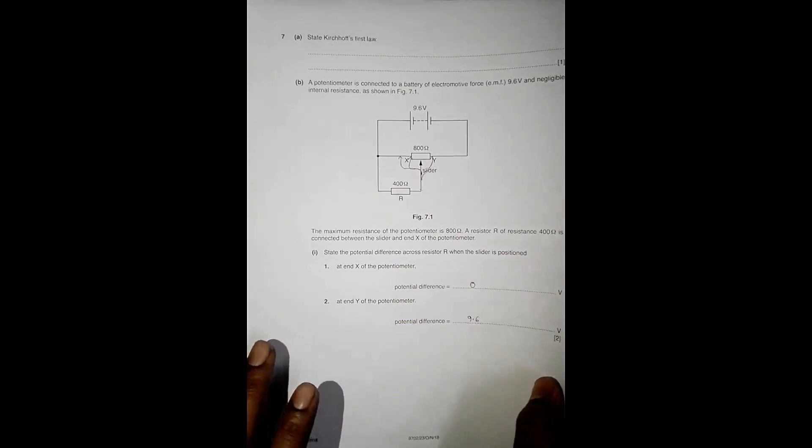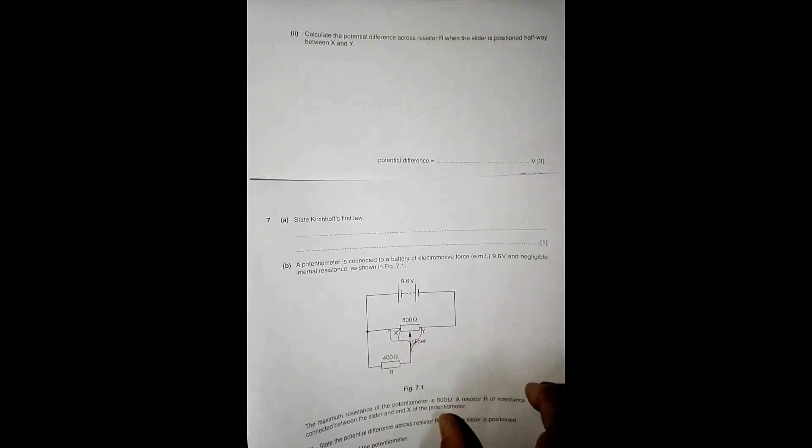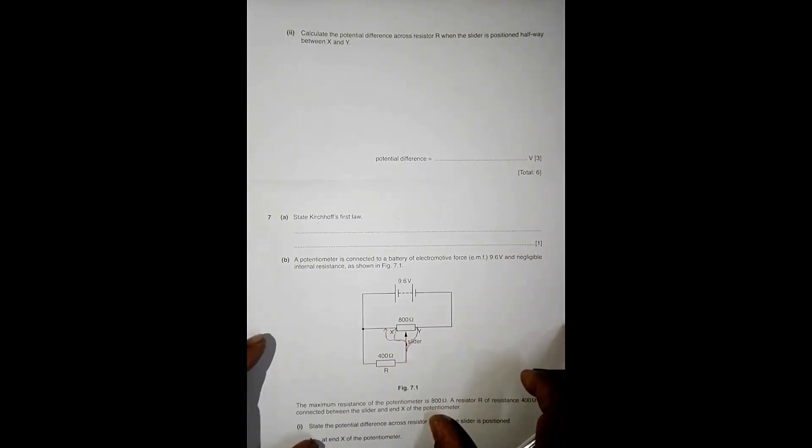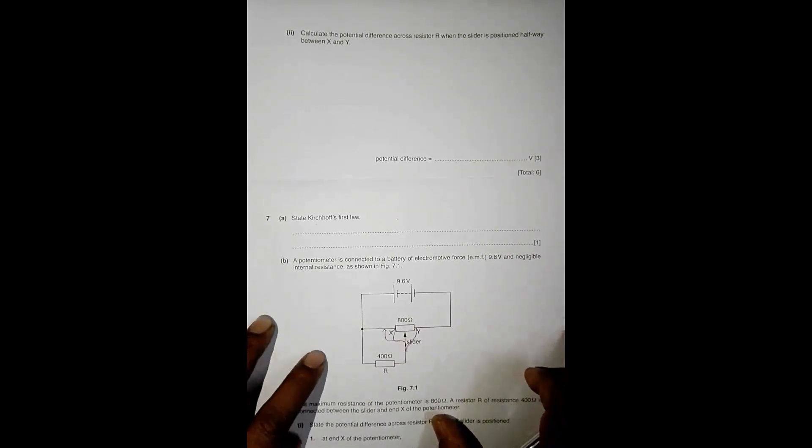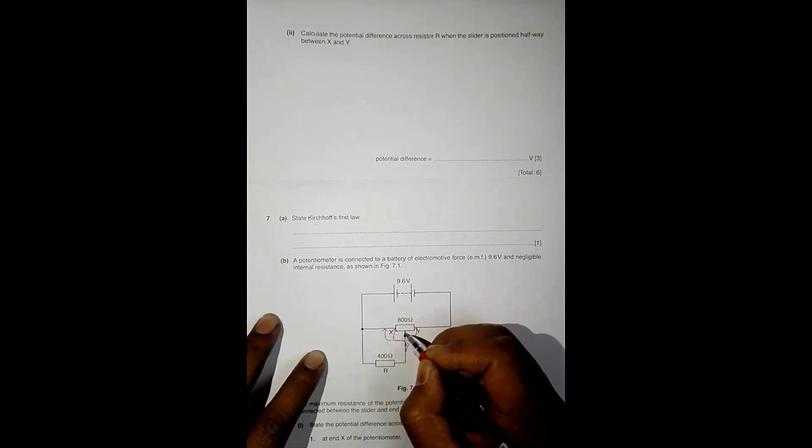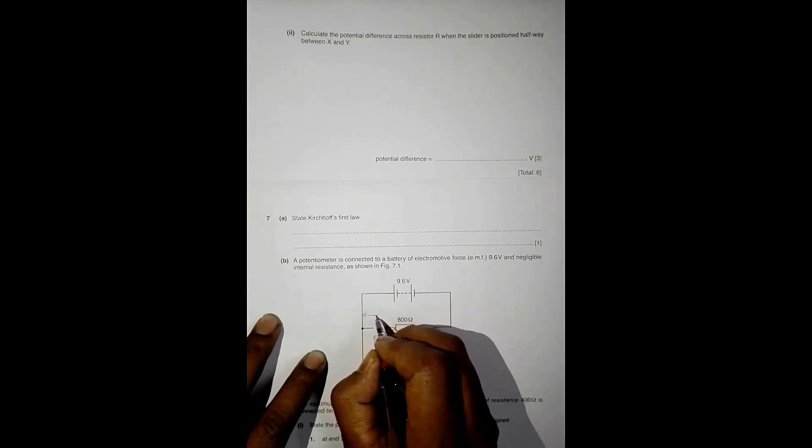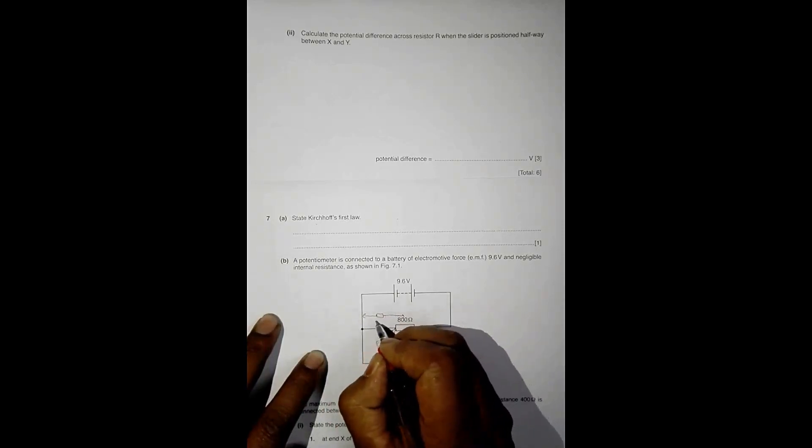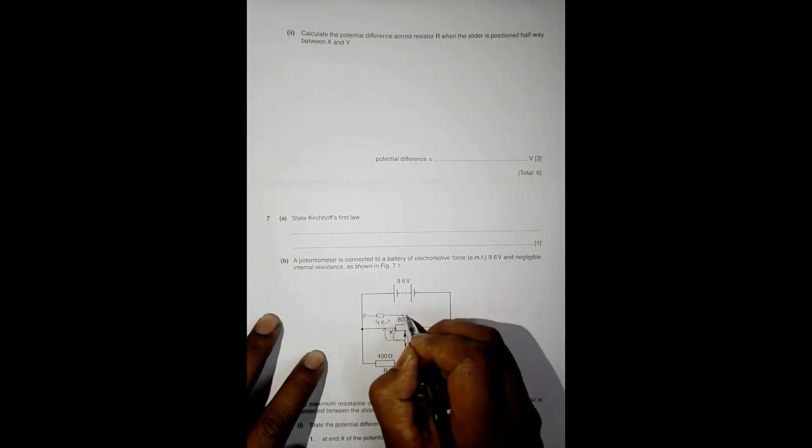Now the next question says calculate the potential difference across resistor R when the slider is positioned halfway between X and Y. So if I connect it here halfway, we have to find the PD here. When I connect this halfway, the resistance here will be equal to half of this, 400 ohms, and here it is again 400 ohms.